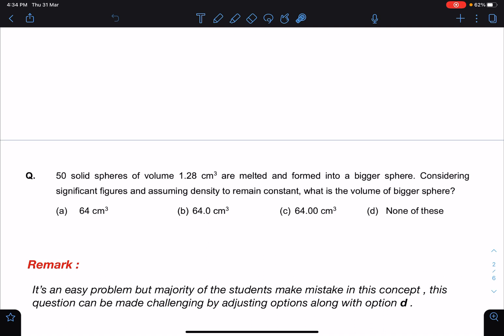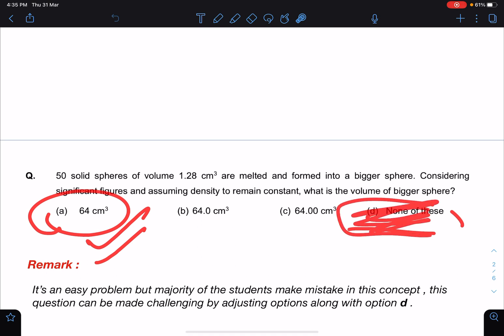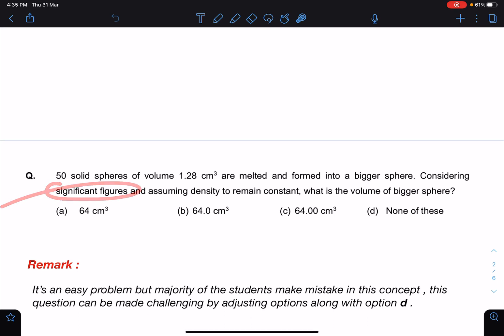However if I have to make this as a challenging problem then I'll be giving this answer as 65 and this maybe I'll give 68. Then it's very likely that almost everyone will be going for 64 centimeter cube but there is none of these. So I'll be choosing none of these as the correct answer because in the question it is mentioned clearly that it is with respect to significant figures.